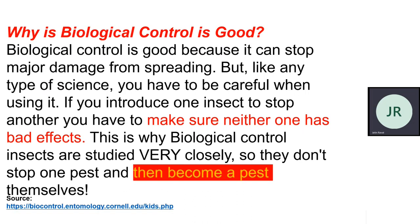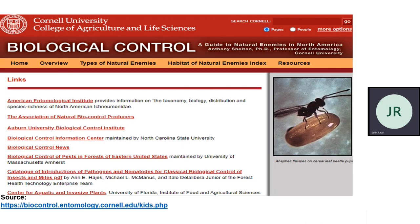Why is biological control good? Because we already know the adverse effects of chemical control that we are witnessing. This is one of the solutions. It cannot stop major damage from spreading. But you have to be expert, and make sure the biological agent has no bad effect — otherwise sometimes it happens that we introduce a biological agent to control the pest, but in turn it itself becomes a pest. Lots of resources are available online for biological control, including research papers and PDF documents on Principles of Pest Control and Progress of Biological Control Research in India.